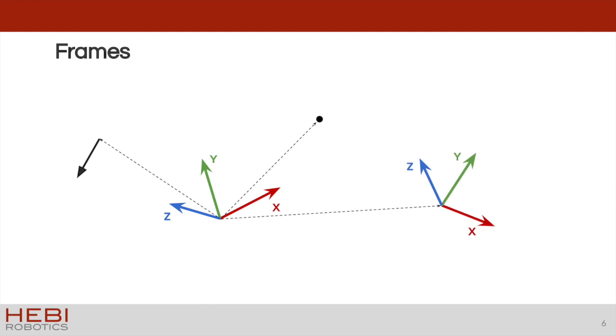One thing to note about these frames is that a coordinate frame must be represented in a coordinate frame. You need to be able to tell where this x-, y- and z-axis is. And so one of the fundamental concepts here is going to be transforms between these frames.